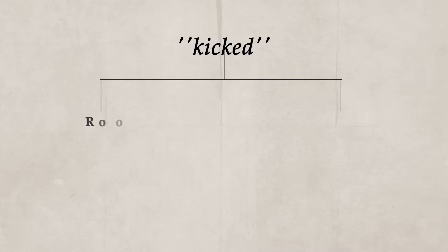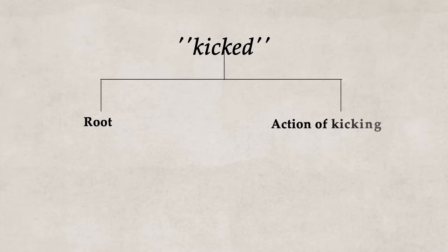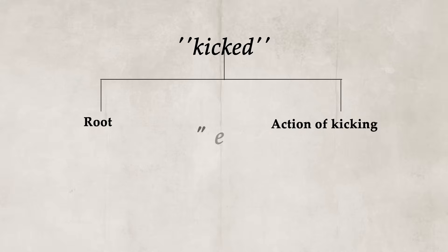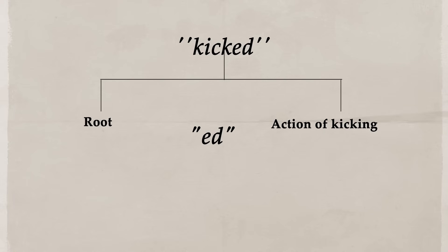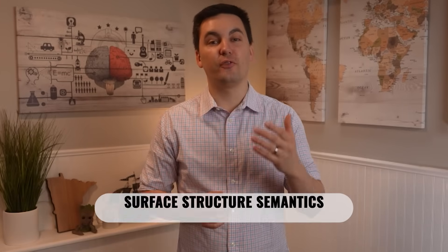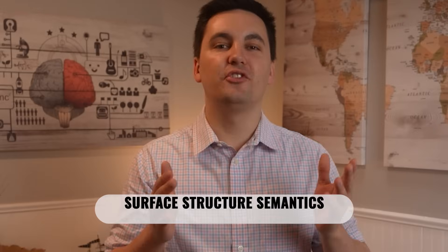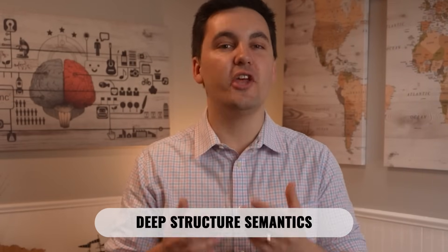We can also see morphemes in action in that same example. The word 'kicked' has two morphemes: 'kick,' which is the root meaning the action of kicking, and '-ed,' a suffix indicating past tense. Now, with semantics, we can see there is surface structure semantics, which is the literal meaning of words, and deep structure semantics, which is the underlying meaning of a sentence.